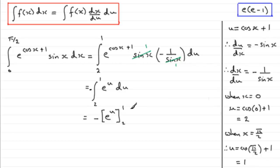If we substitute 1 in first of all for u, we've got simply e to the power 1, or e, and then minus substitute the 2 in and you've got e squared.